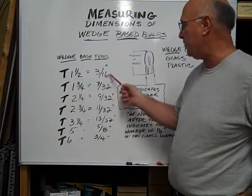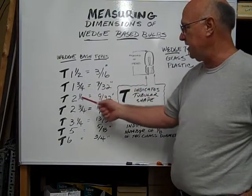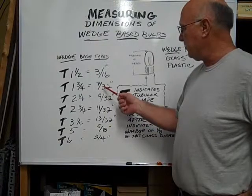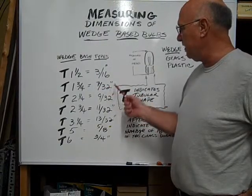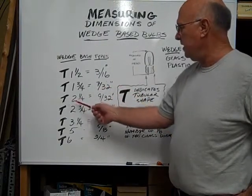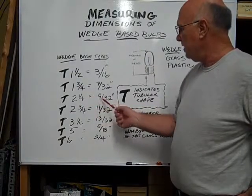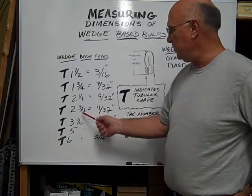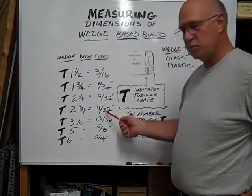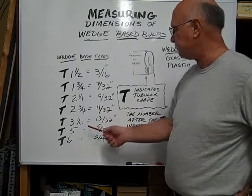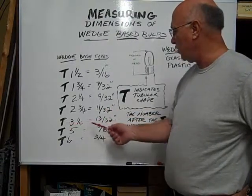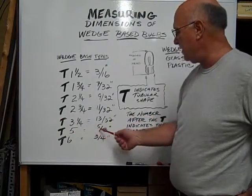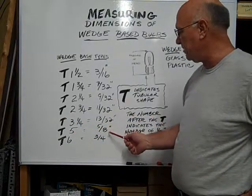But this is a T1½ which is equal to 3/16". A T1¾ is equal to 7/32". A T2¼ is 9/32". A T2¾ is equivalent to 11/32" of an inch. A T3¼ is 13/32". A T5 is equivalent to 5/8 of an inch.